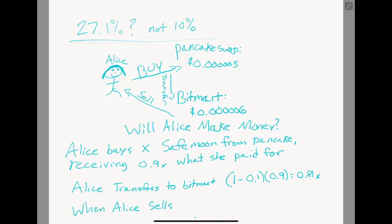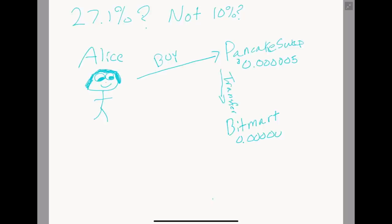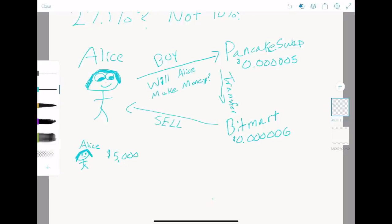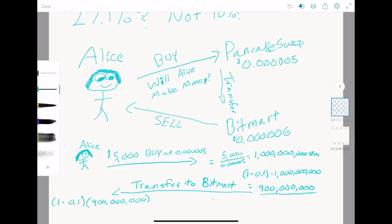When she finally sells, she pays one more 10% tax, reducing her investment down to 72.9%. If you follow along with my math, you will notice that Alice will net a loss with these prices, regardless of how much money she puts in. Now, let's generalize this for all prices and initial investments to get a nice equality.